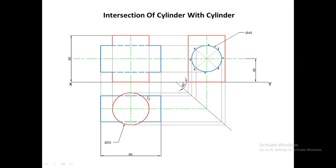Point 5 is already projected in the top view. For points 4 and 6, draw a vertical line in the side view and project it onto the 45-degree line, then project horizontally into the top view. Points 3 and 7 are already projected by the center line. For points 2 and 8, draw a vertical line through them onto the 45-degree line and project horizontal lines into the top view. All points 1 to 8 are now projected. These projection lines should be kept light, not dark.